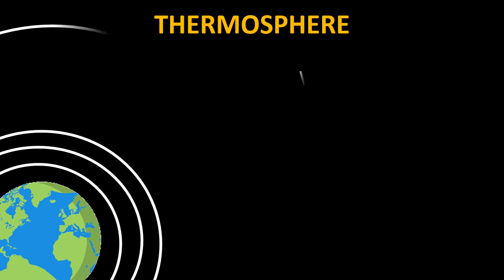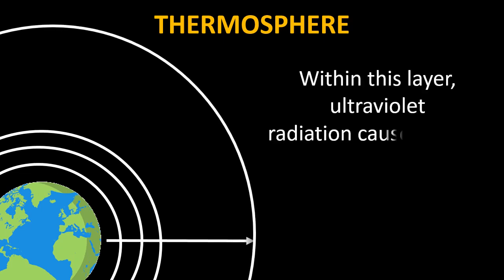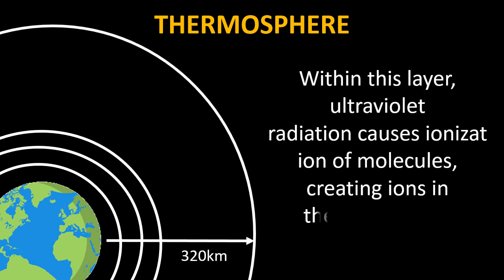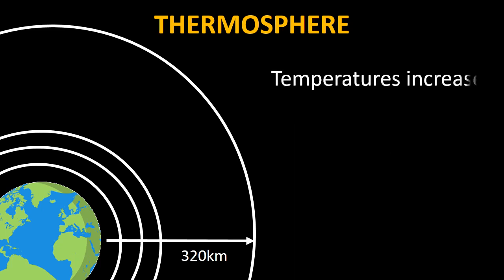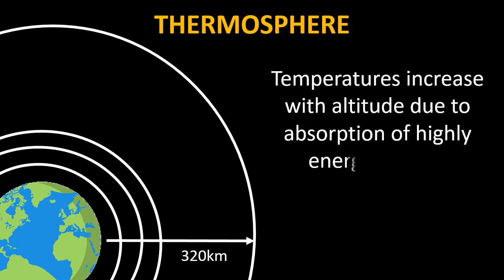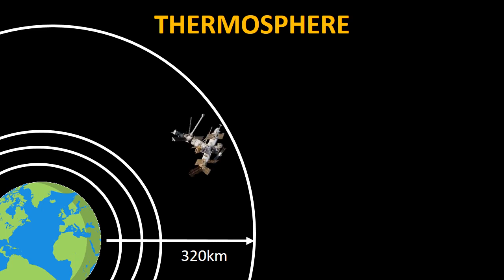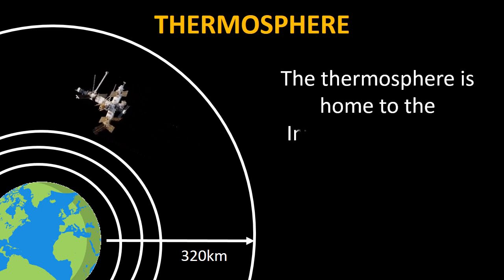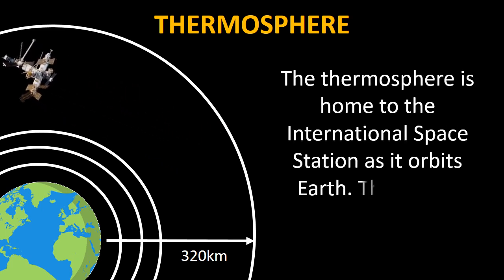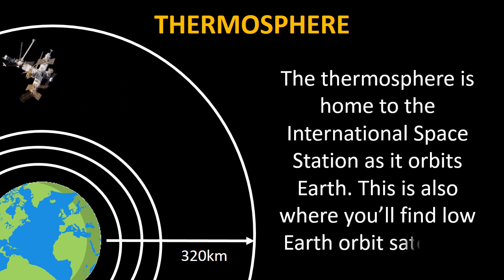The fourth layer is known as the thermosphere. Within the thermosphere, ultraviolet radiations cause ionization of molecules, creating ions in the ionosphere. The temperature in this layer increases with altitude due to absorption of highly energetic solar radiations. The thermosphere is also the home to the International Space Station as it orbits the earth. This is also where you will find low Earth orbit satellites.